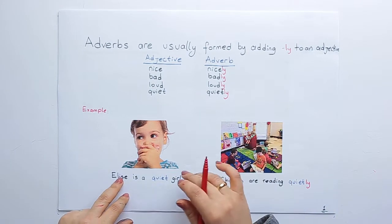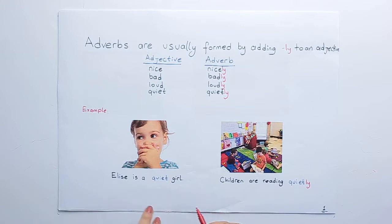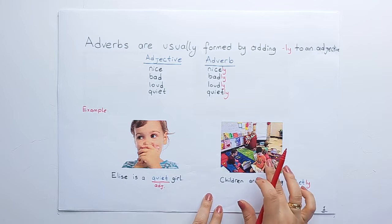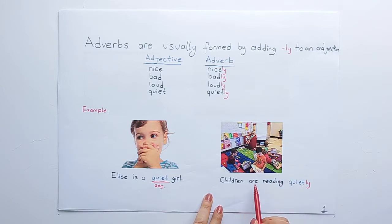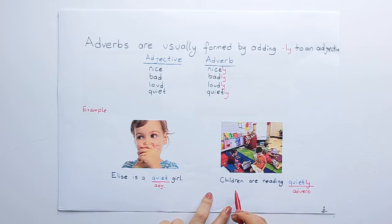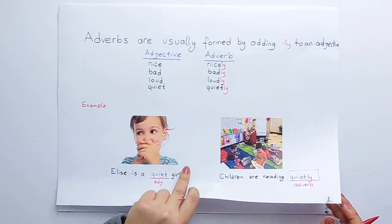Let's look at examples. Alice is a quiet girl — here 'quiet' is the adjective. But here, children are reading quietly. 'Reading quietly' — it's an adverb.